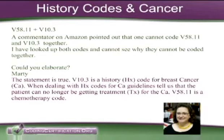They had breast cancer, they're no longer getting treatment, unlike V58.11, which is a chemotherapy code. So if a person is getting chemotherapy, they're getting treatment for their cancer and therefore a history code is not applicable.